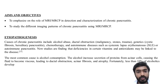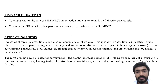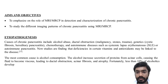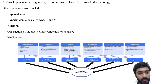Causes of chronic pancreatitis include alcohol abuse, ductal obstruction, genetics, chemotherapy, and autoimmune diseases such as SLE and autoimmune pancreatitis. New studies suggest deficiencies in certain vitamins and antioxidants may also be linked. The most common cause is alcohol consumption, which increases protein secretions from acinar cells causing viscous fluid, leading to ductal obstruction, acinar fibrosis, and atrophy. Less than 10% of alcoholics develop chronic pancreatitis. Other common causes include hypercalcemia, hyperlipidemia, nutritional factors, and ductal obstruction. The TIGAR-O mnemonic covers: Toxic-metabolic, Idiopathic, Genetic, Autoimmune, Recurrent and severe acute pancreatitis, and Obstructive.